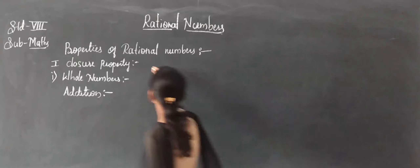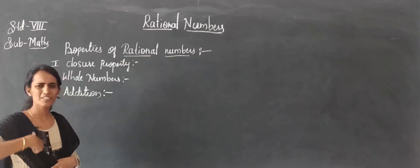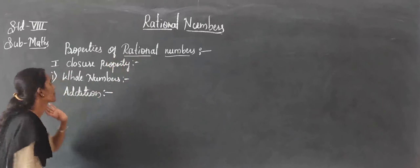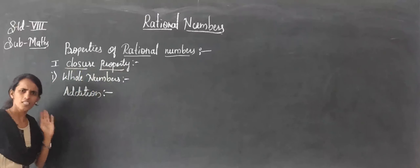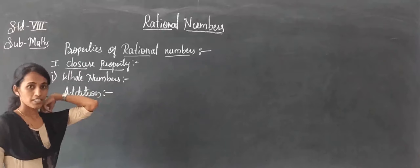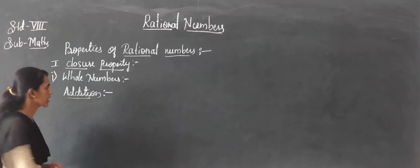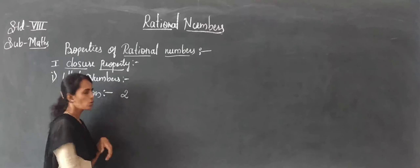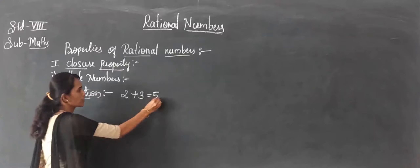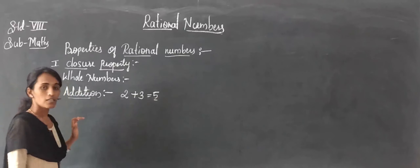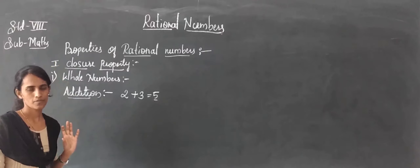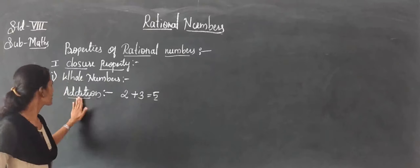Now, properties of rational numbers. Rational numbers include all the previous number types — natural numbers, whole numbers, and integers — so we study properties for rational numbers. The first property is closure property, which we studied in 7th standard. First, we check closure property for whole numbers under addition. For example, 2 and 3 are both whole numbers, and 2 plus 3 equals 5, which is also a whole number.